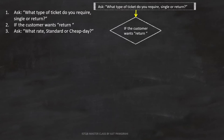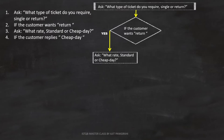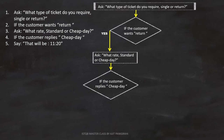Since line three is a statement, we can represent it like this. Line number four is: if the customer replies cheap day. This is a condition, and we can represent it like this in the flowchart. Line number five is: say that will be 11.20. This is a statement, so we can represent it like this.